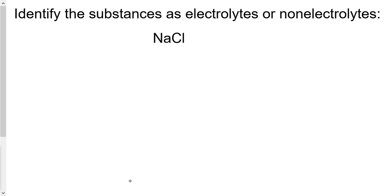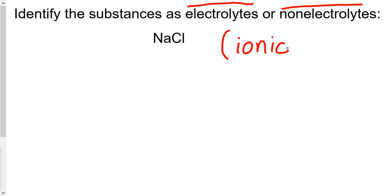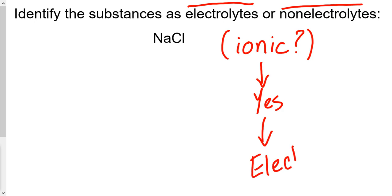In order to identify NaCl as an electrolyte or non-electrolyte, first I have to think about NaCl as a molecule or substance. Is it an ionic substance? Is it a covalent substance? Is it a metallic substance? Let's keep it simple. If it is an ionic substance, then it is going to be an electrolyte. If the answer is no, it is going to be a non-electrolyte.